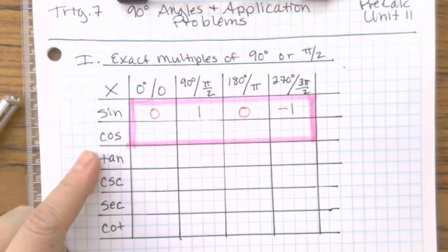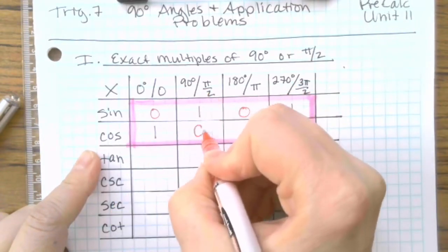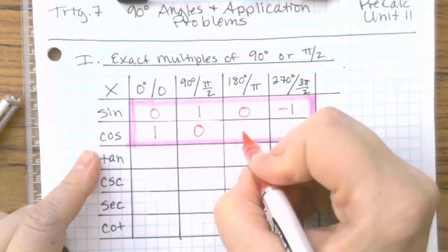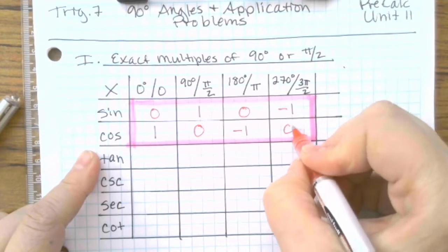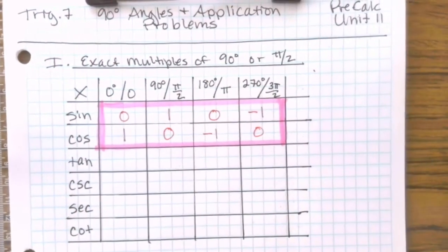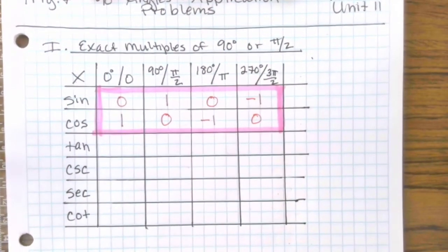Now the cosine angles look a lot alike, but they start with 1. It goes 1 for the 0, 0 for 90 degrees, negative 1 for 180, and 0 for the 270. So how can we use these to figure out the rest?